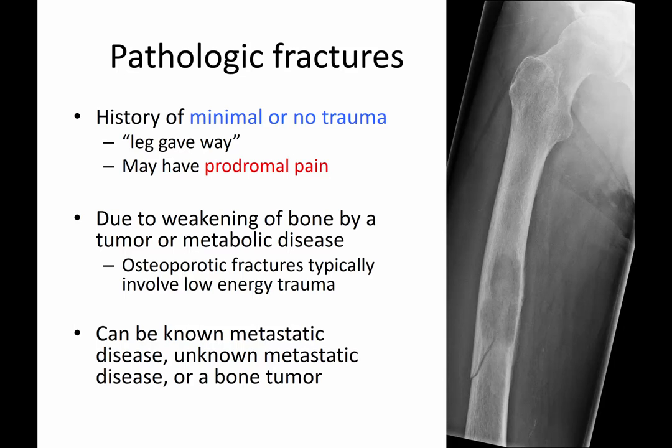Pathologic fractures usually refer to a fracture occurring in the setting of a tumor. It's very important to get a good history — a patient may tell you they have known metastatic disease and have had fractures in other bones. They may report minimal or no trauma, such as pain in the thigh for weeks that worsens with walking and even at night, and then the leg simply gave way. A femoral shaft fracture from just walking should be suspicious for a tumor, since it normally takes significant trauma to cause that.